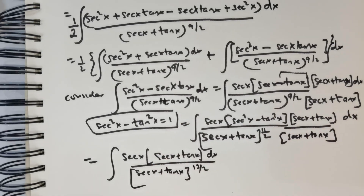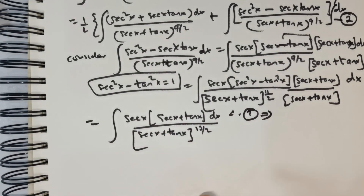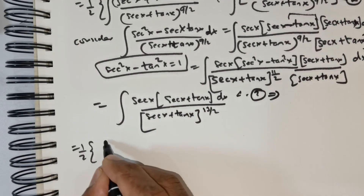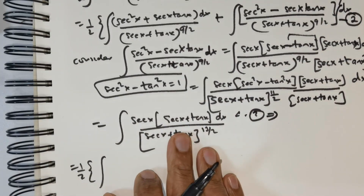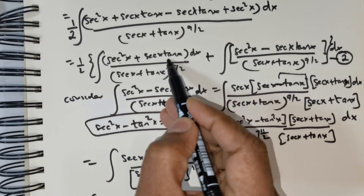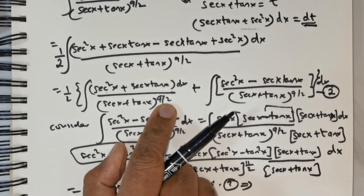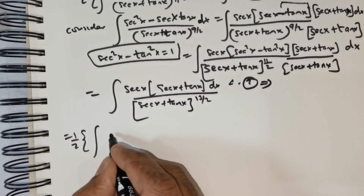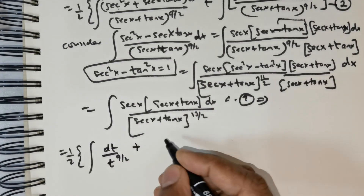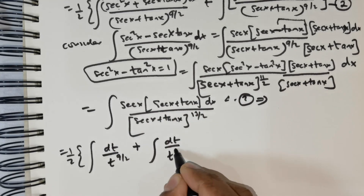Now substituting back into the full expression, this is equal to one-half times the integral. In place of secant squared x plus secant x tan x I substitute dt, and in place of secant x plus tan x I substitute t, giving dt divided by t raised to the power of 9 over 2. For the second integral the substitution gives secant squared x plus secant x tan x equal to dt, divided by t raised to the power of 13 over 2.